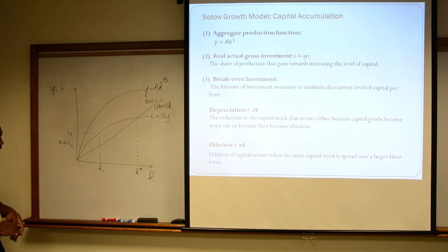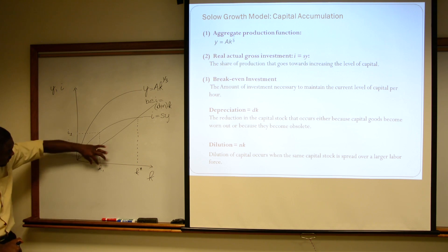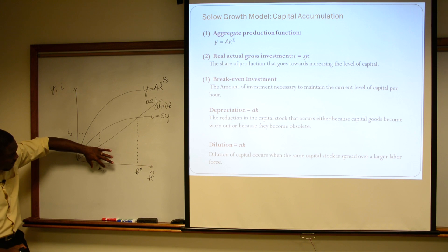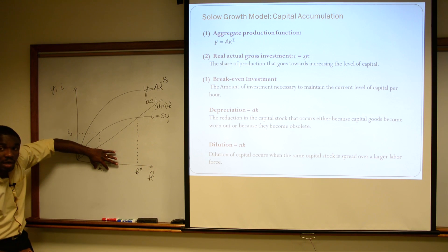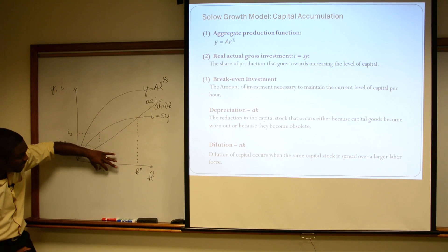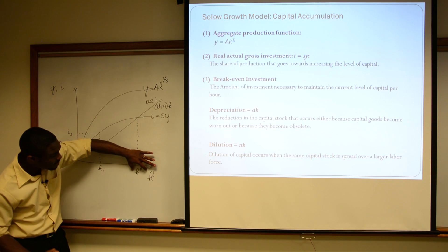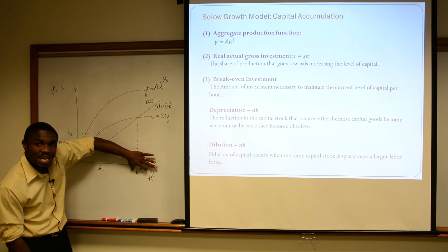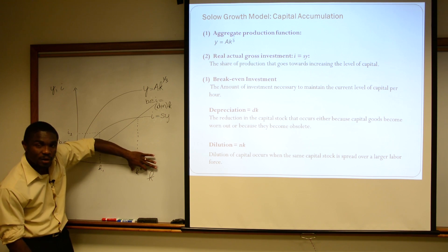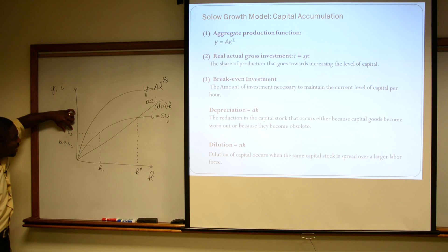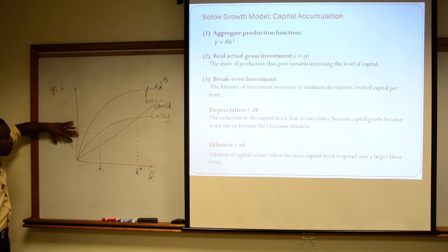What is this saying to us? It's saying that if K1 — our actual capital per person — is less than our steady state capital per person, then our actual investment is going to be greater than our break-even investment.